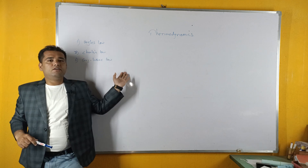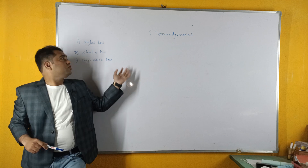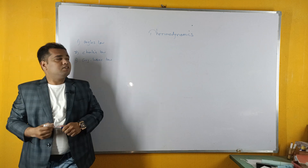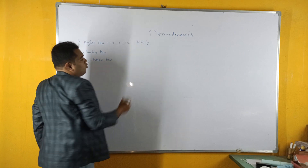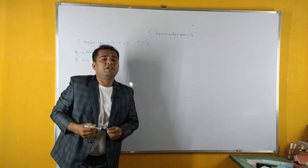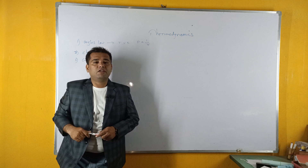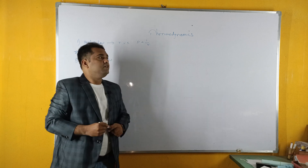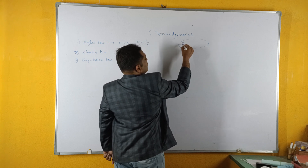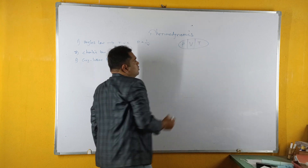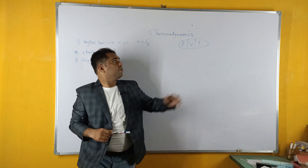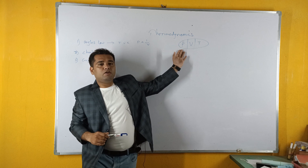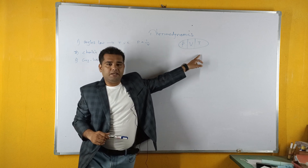From these three basic laws, we are going to derive the basic thermodynamic properties. In total, thermodynamic relations involve three properties: pressure, volume, and temperature. These three properties describe the entire thermodynamic processes we are going to discuss. So first of all, we have to know what is pressure, what is volume, and what is temperature.